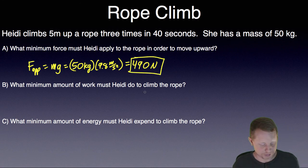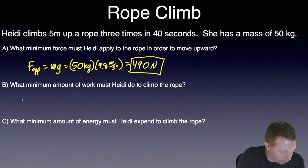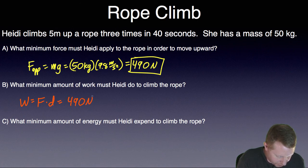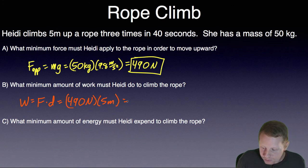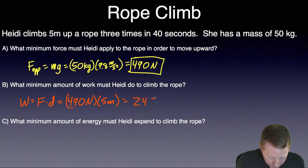What minimum amount of work, then, must she do in order to climb the rope? Well, work is force times displacement. She did 490 newtons as the force, and the displacement is 5 meters. So that's 2,450 joules of work.